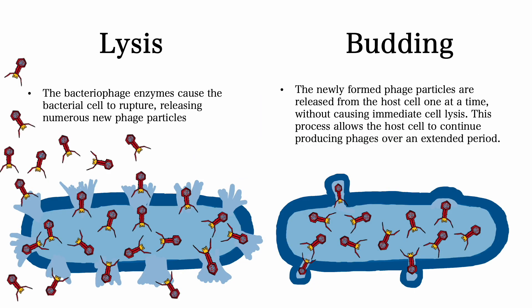Finally, the assembled phage particles are released from the bacterial cell either through lysis or a more subtle process known as budding. In lysis, the bacteriophage enzymes cause the bacterial cell to rupture, releasing numerous new phage particles. In budding, the newly formed phage particles are released from the host cell one at a time without causing immediate cell lysis. This process allows the host cell to continue producing phages over an extended period of time.